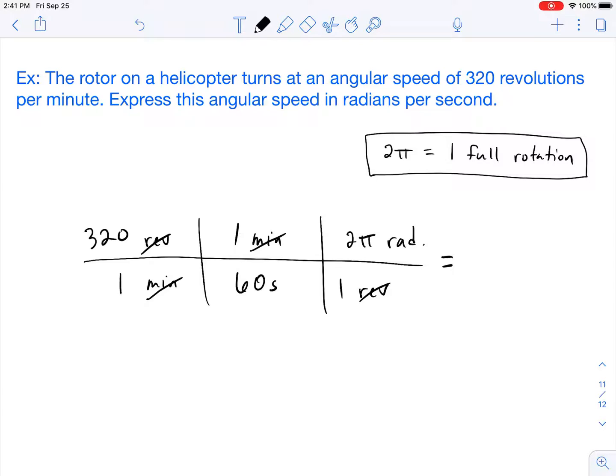At this point it's just a matter of multiplying everything on the top and then dividing by everything at the bottom. So if we were to go 320 times 2π we would get 2010.6 radians. Divide that by 60 seconds we get a final answer of 33.5 radians per second.